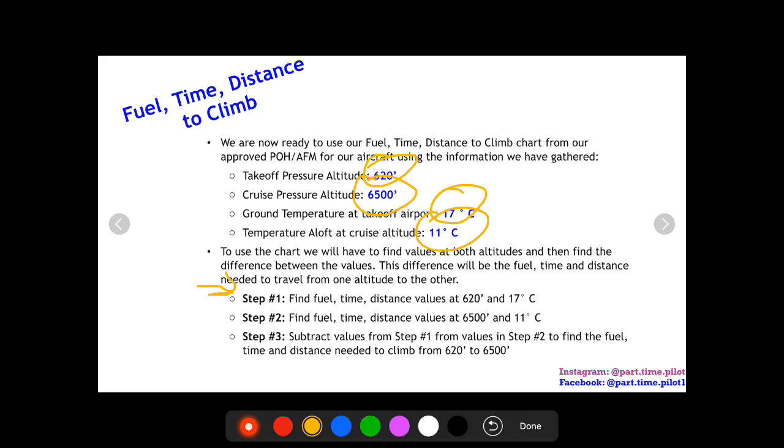Second step is we do the same thing: we find these values at our cruise altitude and temperature. And step three, we subtract our cruise altitude values by our takeoff altitude values. That difference in those values for fuel, time, and distance to climb will be the fuel, time, and distance to climb it takes to travel from takeoff to cruise. So let's do it.